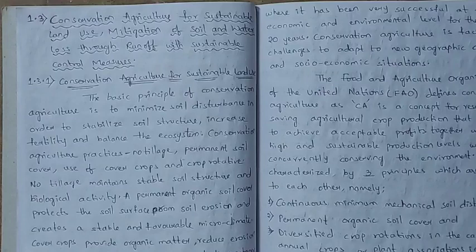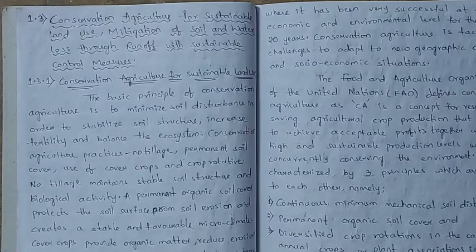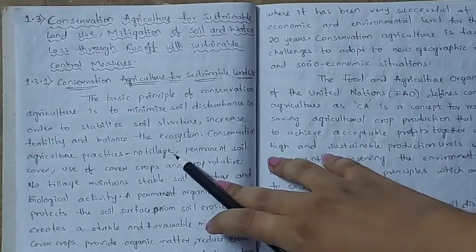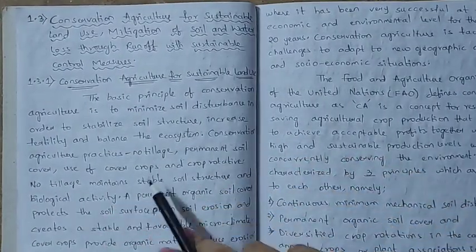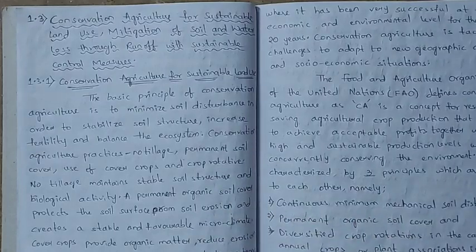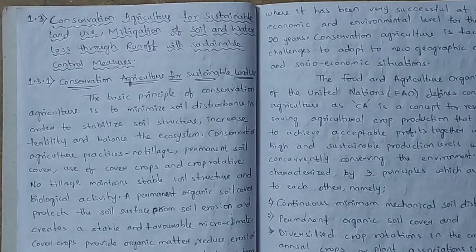When we practice conservation agriculture, certain methods are followed. These are: no tillage, permanent soil cover, use of cover crops, and crop rotation. By following these practices, we can do agriculture with less damage and without disturbing the soil.